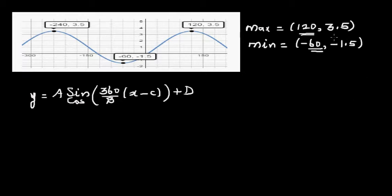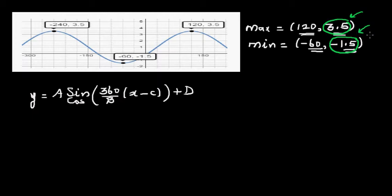From the x-coordinate of the maximum you'll get the period, and from the y-coordinates you'll get the baseline and the amplitude. The baseline is halfway between the maximum and the minimum.